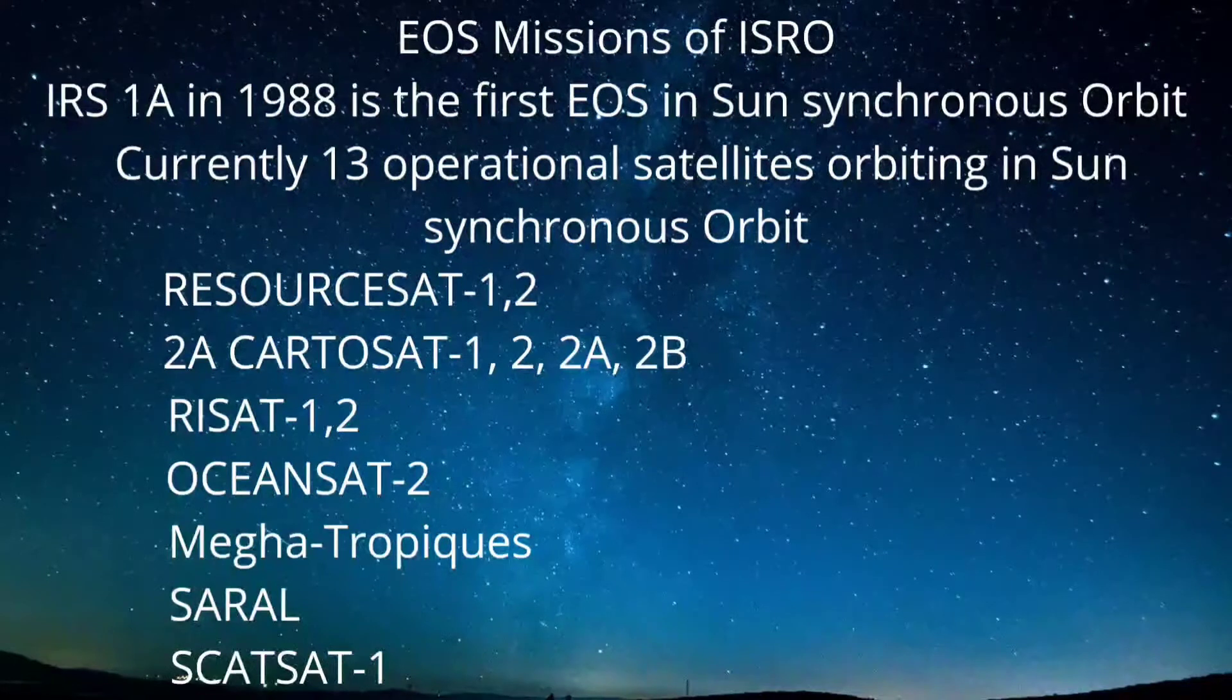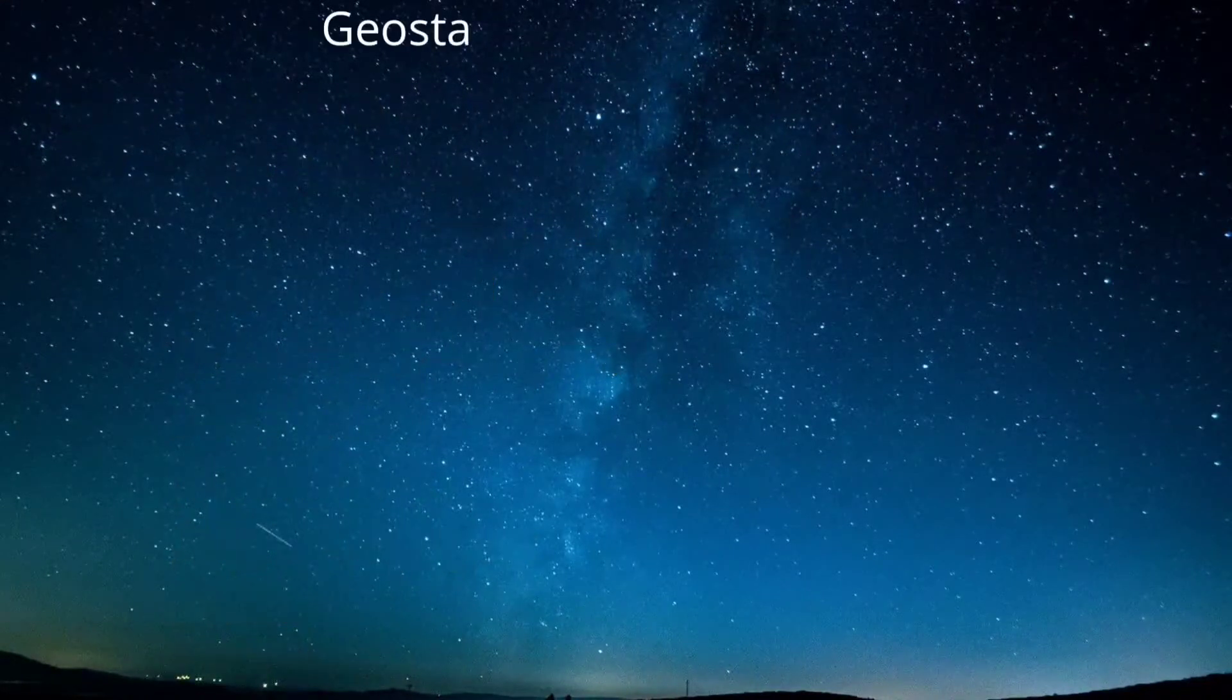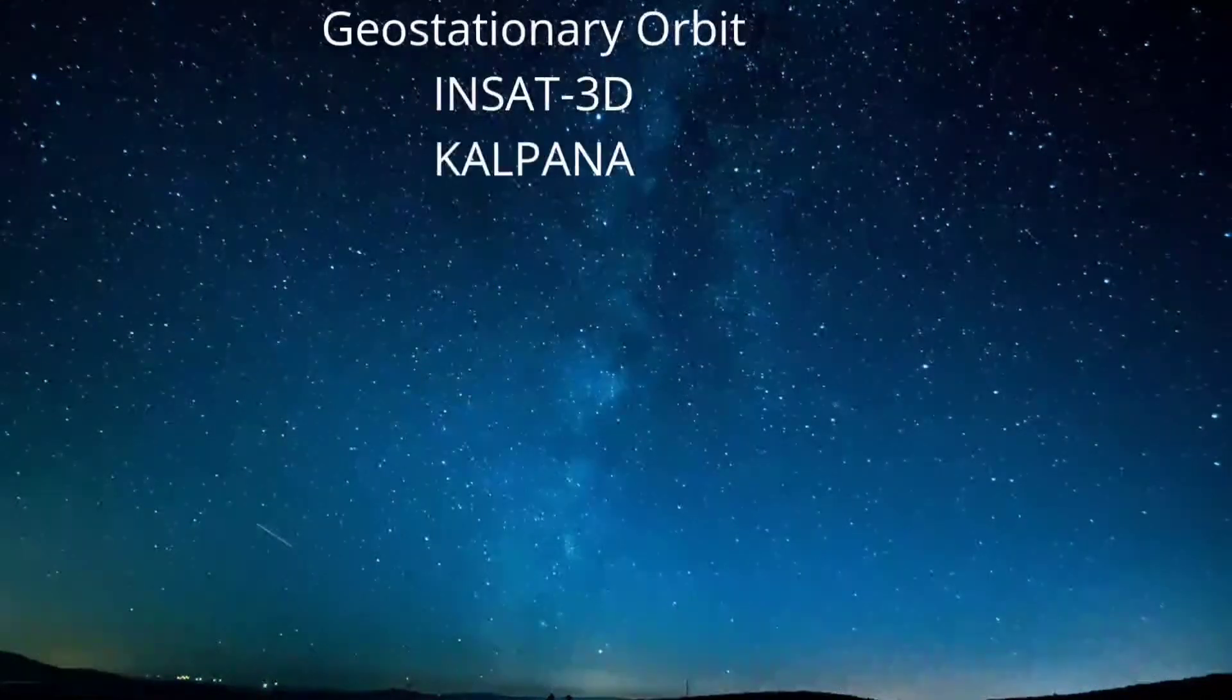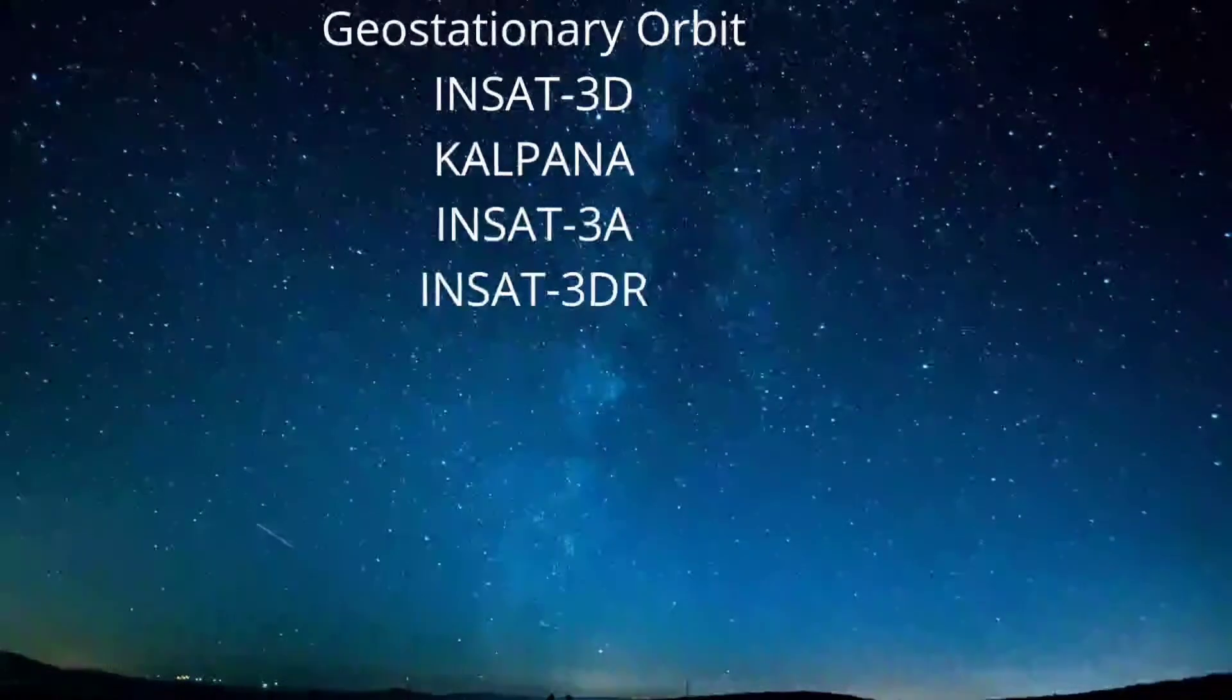SCATSAT-1. Four Earth Observation Satellites are orbiting in Geostationary Orbit: INSAT-3D, Kalpana, INSAT-3A, and INSAT-3DR.